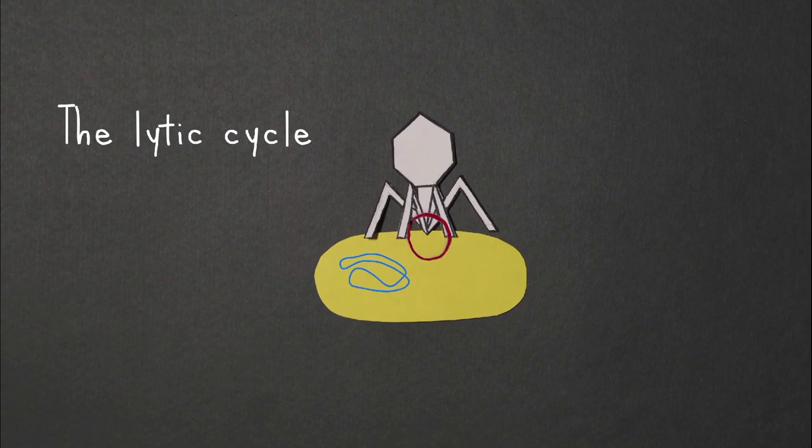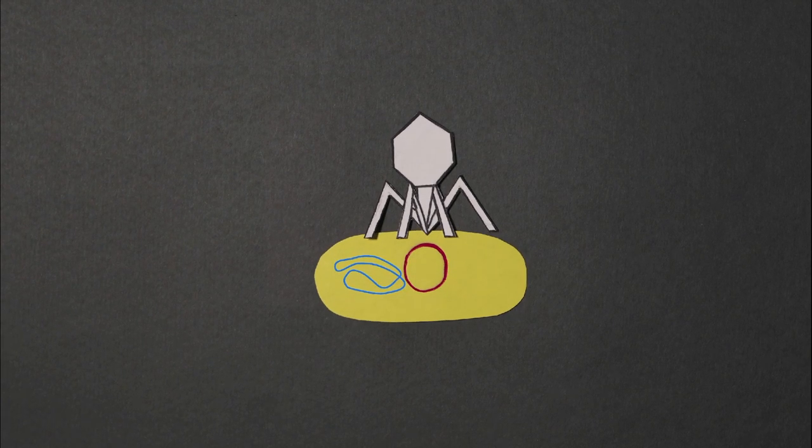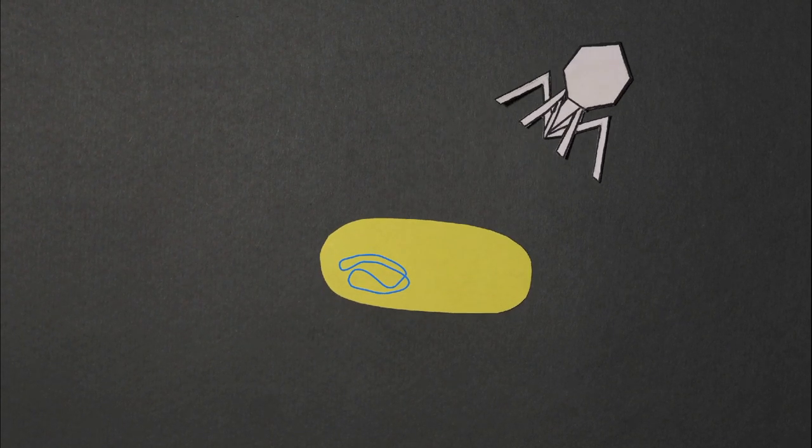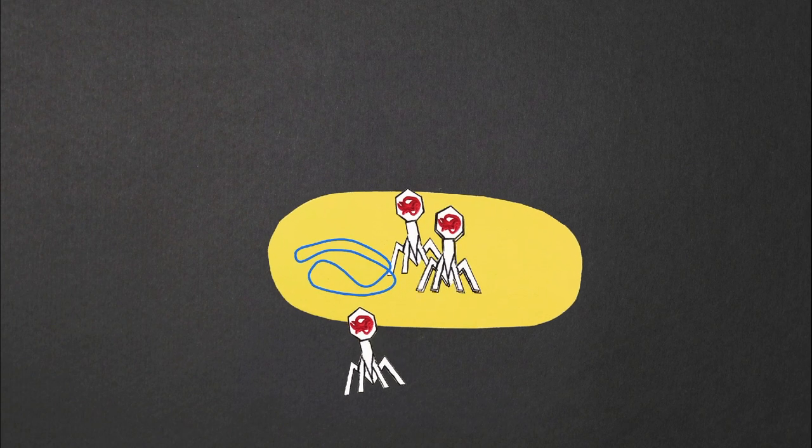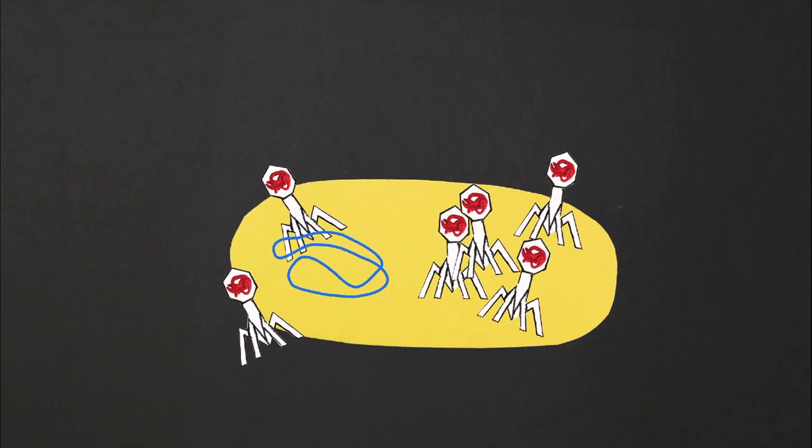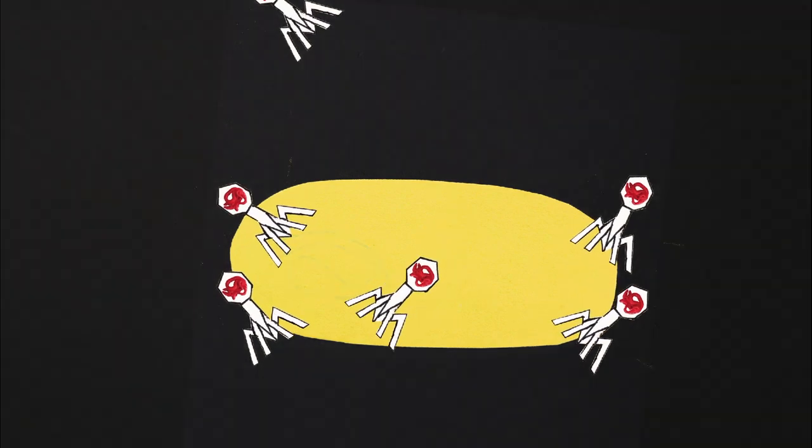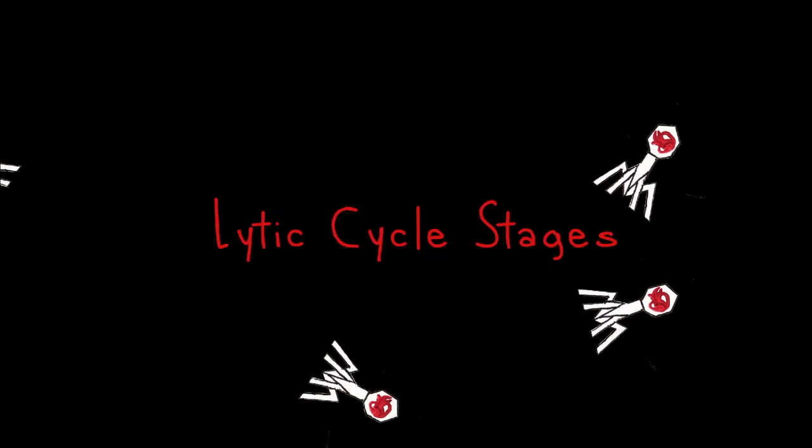In the lytic cycle, a phage acts like a typical virus. It takes over its host cell and uses the cell's resources to make lots of new phages. This hijack will then cause the cell to burst and die. And these are the five main stages of the lytic cycle.